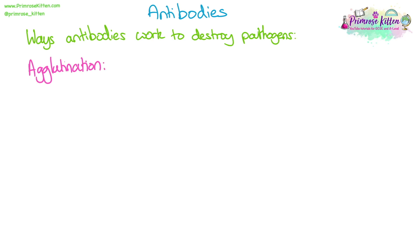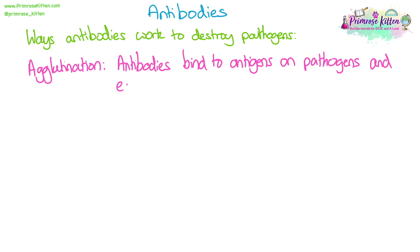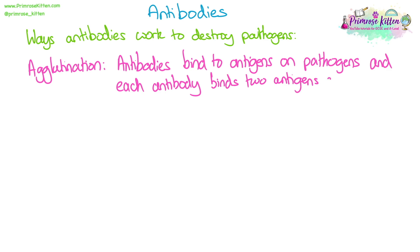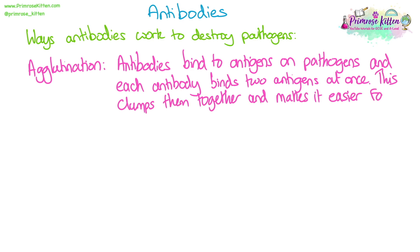One way is agglutination. This is where antibodies bind to antigens on pathogens and because each antibody can bind two antigens at once, they can clump pathogens together. One antibody could bind and join two pathogens, and if lots of antibodies do this they form a clump. This makes it easier for a phagocyte to engulf more than one pathogen at once, speeding up digestion of those pathogens.